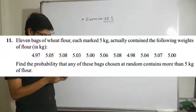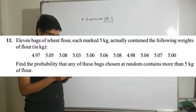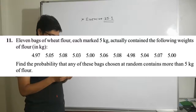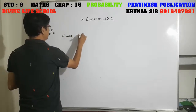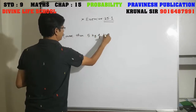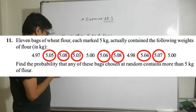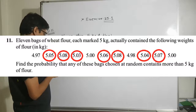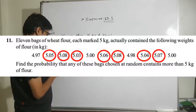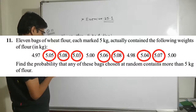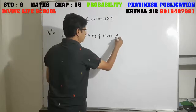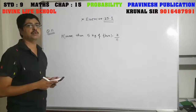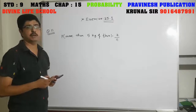Question 11. 11 bags of wheat flour each marked 5 kg actually contain the following weights. Find the probability that a bag chosen at random contains more than 5 kg of flour. Bags containing more than 5 kg: 5.05, 5.08, 5.03, 5.06, 5.08, 5.04, and 5.07 — total 7 bags. So answer is 7 upon 11, since there are 11 bags in total.